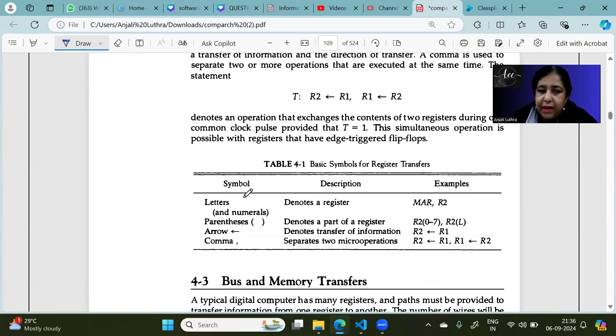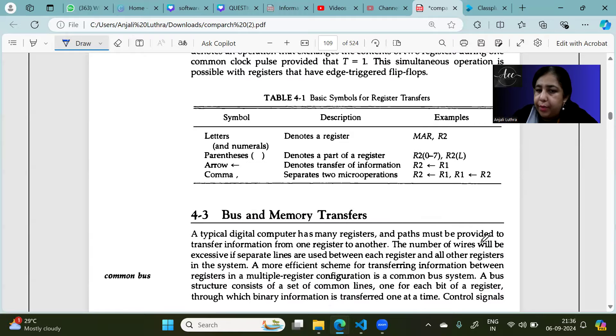Now you have to focus on these things, that you can use letters and numerals to give a register name, like MAR, R2. If you have to refer to specific bits, then we can write bits in round brackets to represent the register. Arrow is to transfer, and comma is to show multiple micro-operations. So this is just how we write RTL, that is Register Transfer Language.